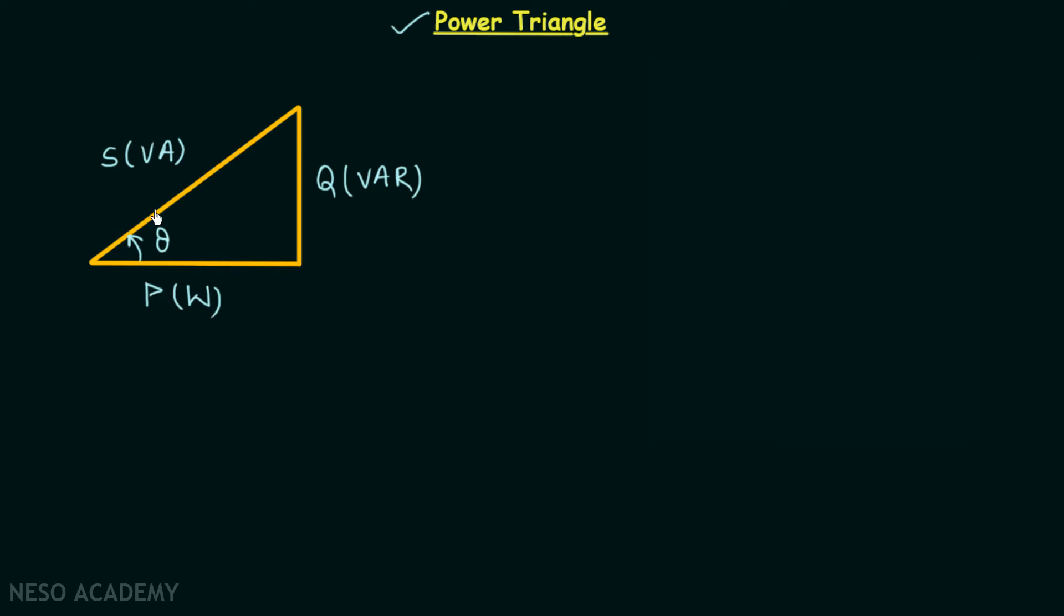Now if two items out of these four items are given then by using this triangle we can have the other two items. S is the hypotenuse and therefore we can say that S will be equal to the square root of square of P plus square of Q.